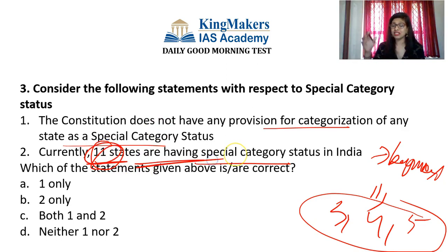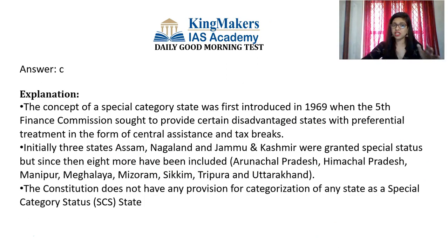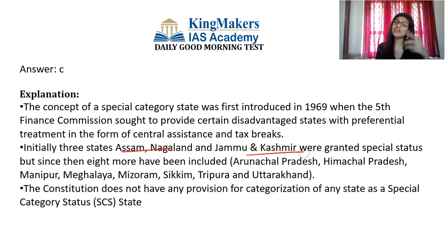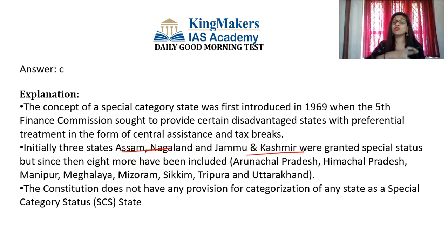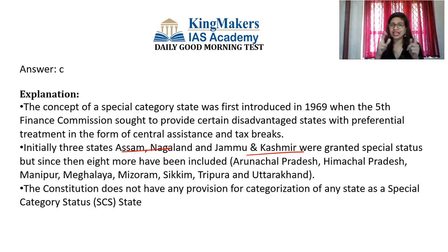There is a difference between central sector schemes, where 100% funding is done by the central government, and centrally sponsored schemes, where funding is shared between center and state — for example, 60% by center and 40% by state. For special category states, instead of the normal 60% central share, the center contributes 90%, and the remaining 10% is borne by the respective state government.